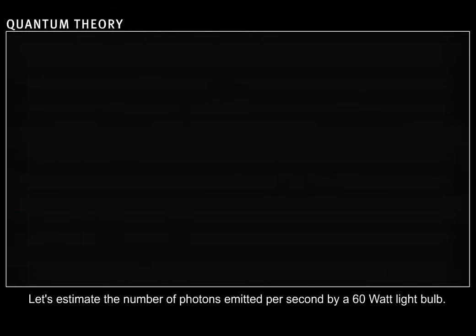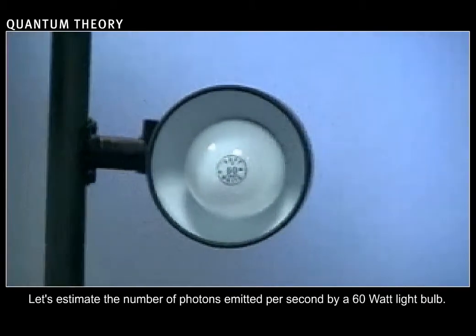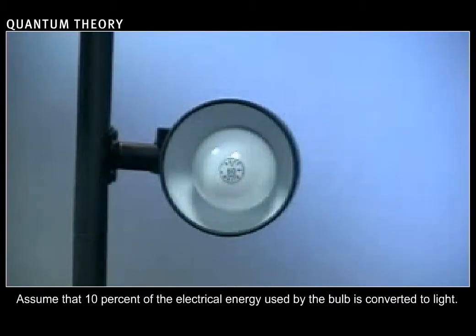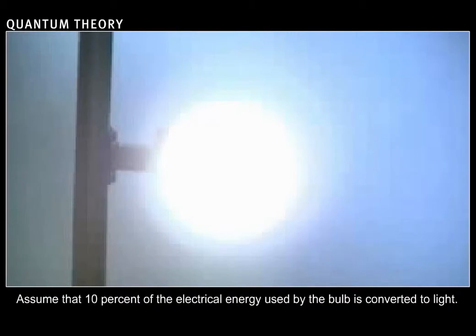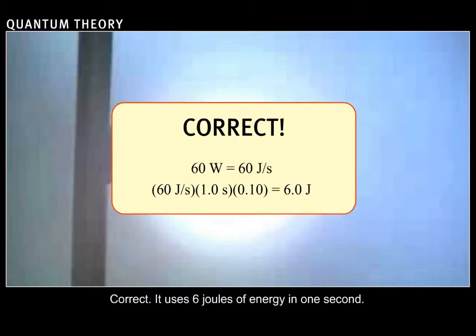Let's estimate the number of photons emitted per second by a 60-watt light bulb. Assume that 10% of the electrical energy used by the bulb is converted to light. What is the light energy emitted per second by the light bulb? Correct. It uses 6 joules of energy in one second.